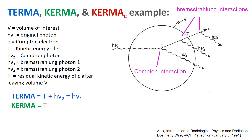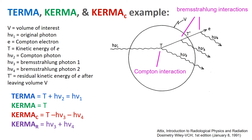KERMA equals the kinetic energy T given to the electron — whatever happens after that is all part of KERMA. We can then subdivide into collision KERMA and radiative KERMA. Collision KERMA is the energy absorbed through collision events along the electron path, equal to T minus hν₃ minus hν₄ (the bremsstrahlung photons). Radiative KERMA is the opposite portion — the energy radiated away — equal to hν₃ plus hν₄.